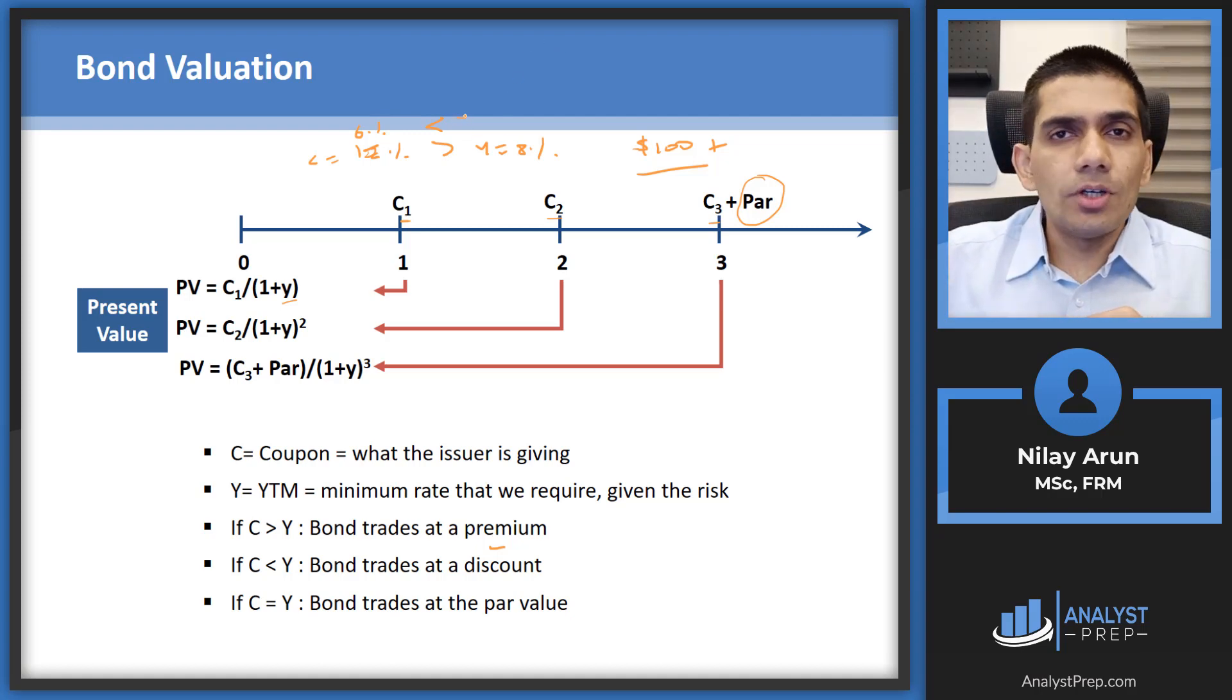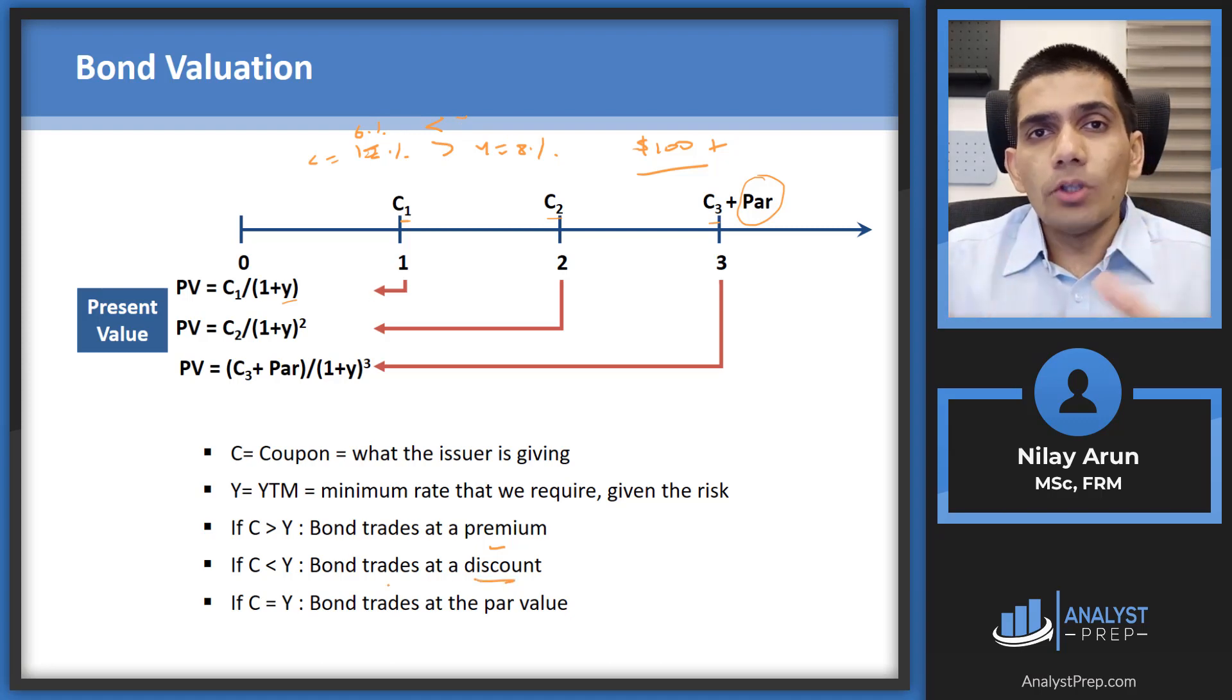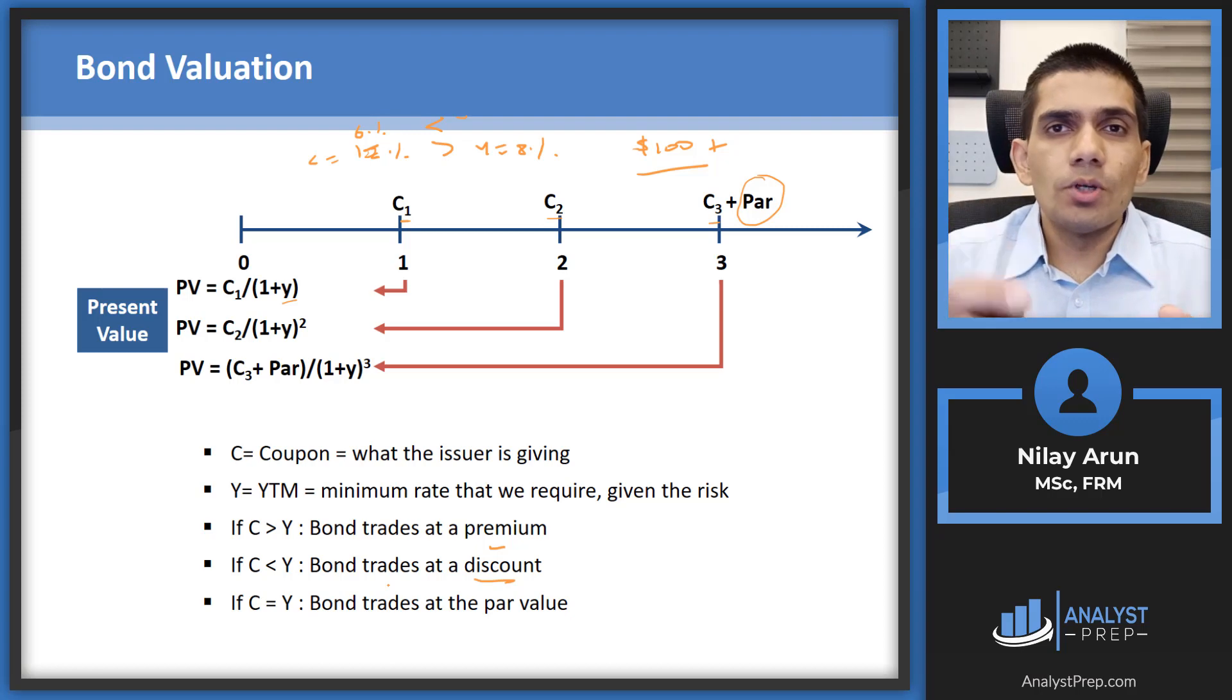That means the bond will trade at a discount. So when your coupon is less than your yield, the bond is going to trade at a discount. If both the values are equal, which means the issuer's rate of return is equal to the rate of return which you demanded, then there's no reason for the bond to trade at more than 100 or less than 100. It will trade at exactly 100, which means it's going to trade at par.